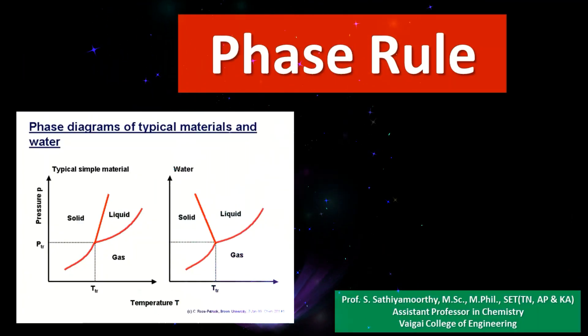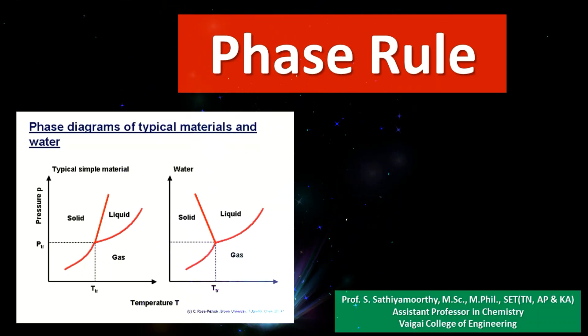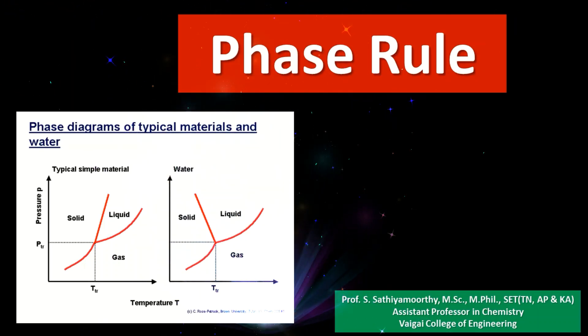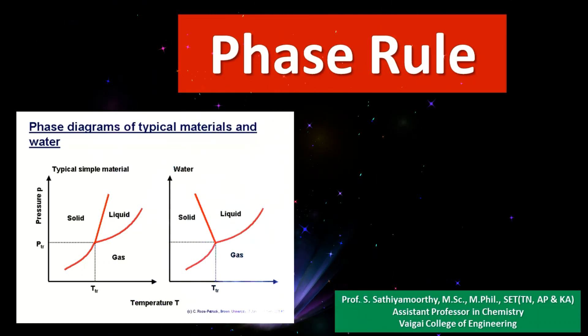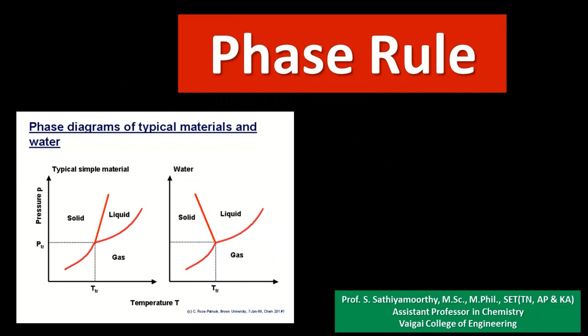In this unit we are going to discuss first about phase rule. Phase diagrams are the gifts of phase rule, and these diagrams are very helpful in making new alloys. Every one of us knows that stainless steel is ruling the world — it is made from iron and is rust-free, meaning the rate of corrosion is very much less. Similarly, brass, bronze, duralumin (used in making wings of helicopters and aeroplanes), and alnico — we utilize so many alloys in our real life by mixing metals and non-metals and converting them into alloys.